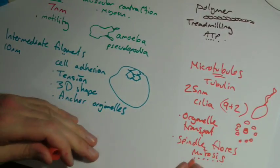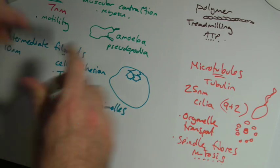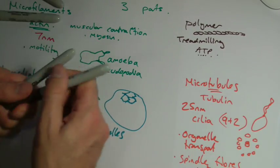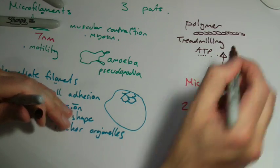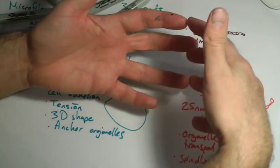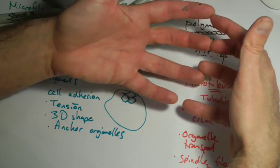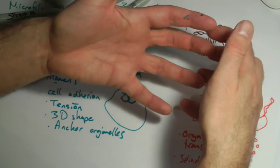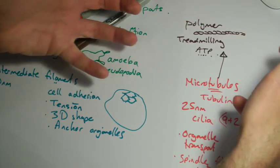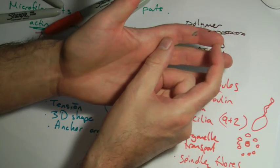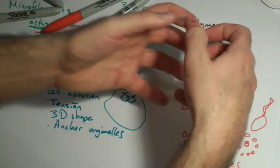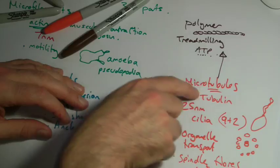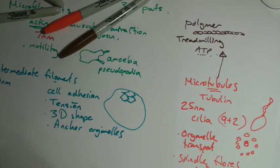Microtubules, just like microfilaments, also do the treadmilling thing. This is how they're able to - when you say in mitosis that the spindle fibers pull the chromosomes apart - what they actually do is they shorten at one end, so they get shorter. They don't really pull, they just get shorter at one end, and that's what pulls the chromosomes apart. Technically, it's doing the treadmilling thing again, but it's doing it just from one end.